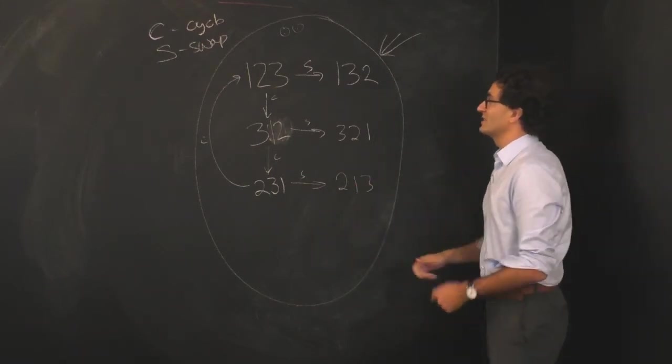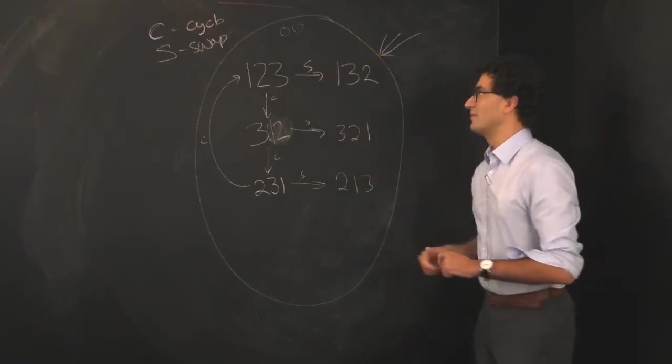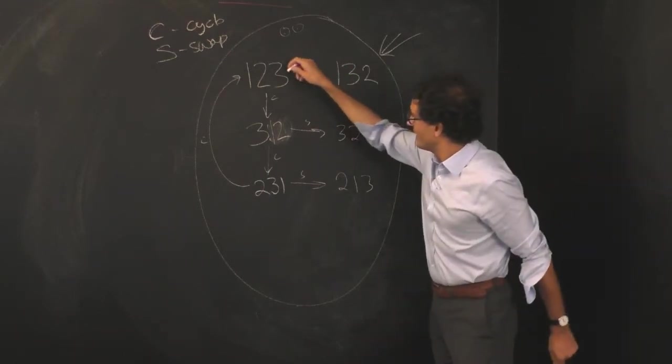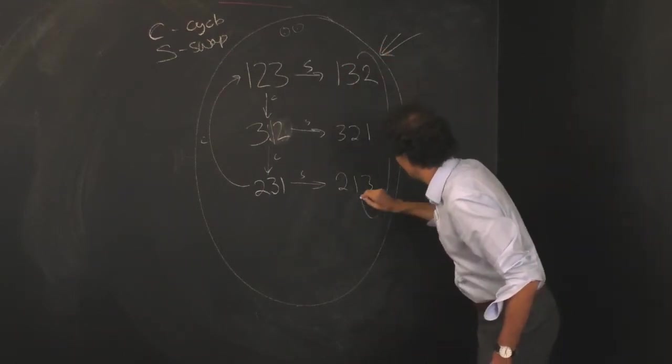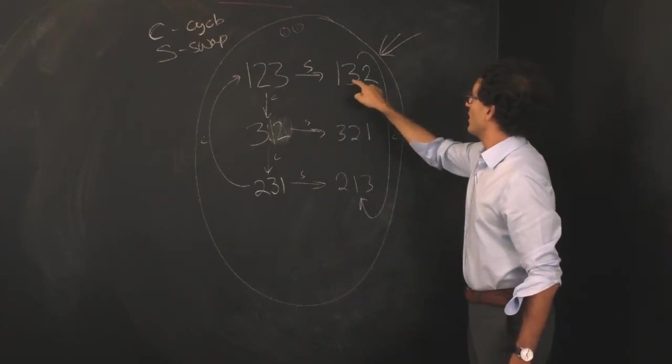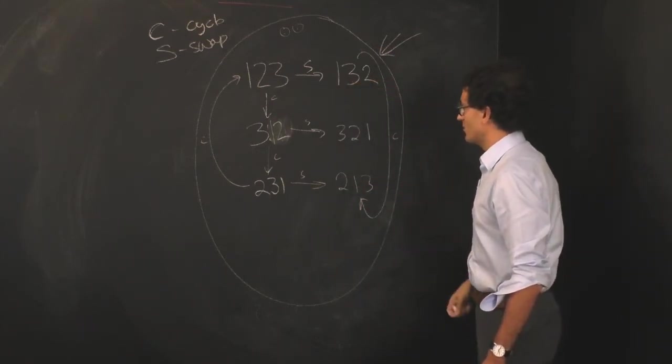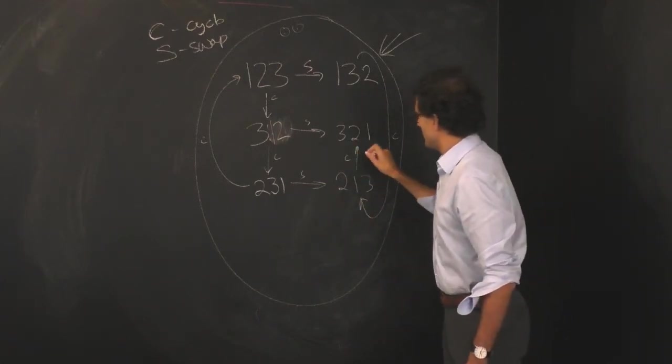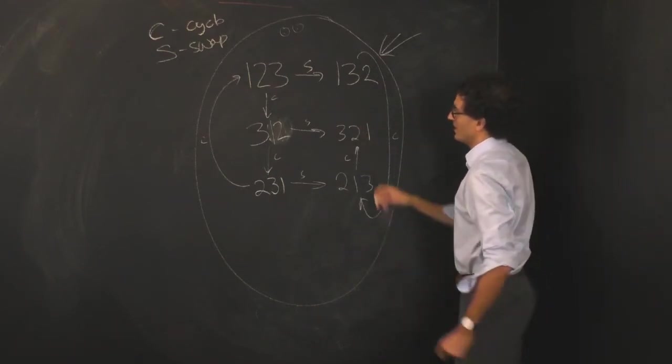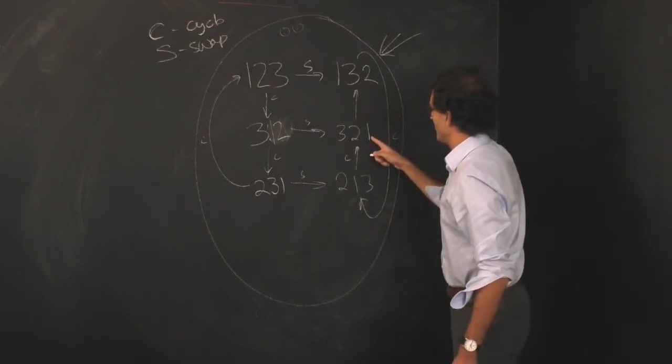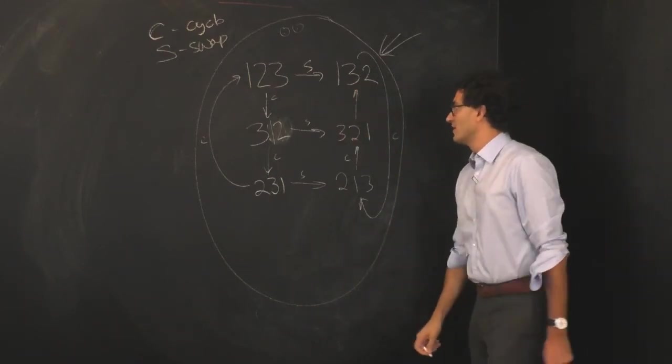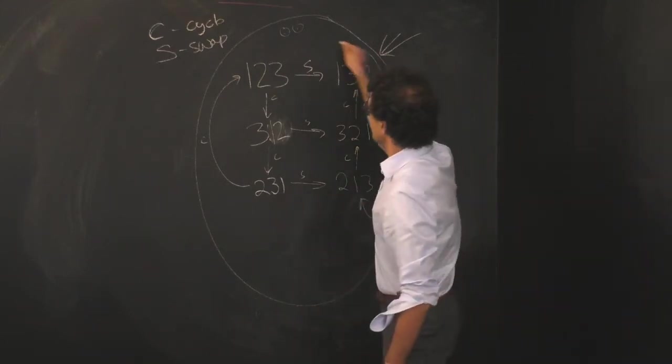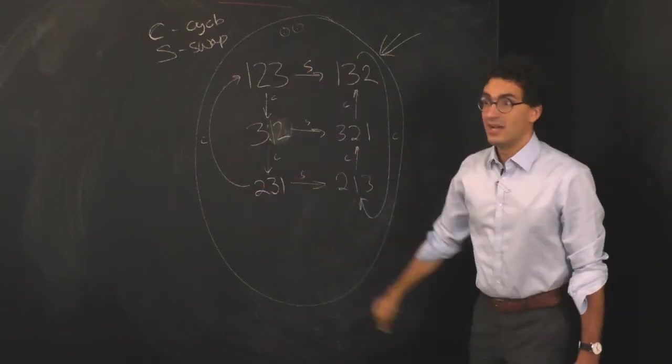And notice, of course, that if the creature is in this state here, I should still be able to do the cycle. Let's see what happens. If I do the cycle here, notice that instead of going down, it actually goes around like this. If I cycle one, three, two, I get two, one, three. And in fact, as you can see, if I take this three and stick it in front here, the cycle operation takes me up. And it takes me up again here. I put the one in front and I get one, three, two.